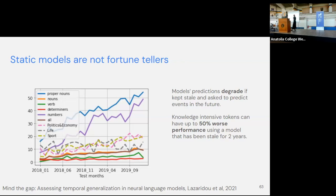A paper that highlights this problem is called 'Mind the Gap.' It tests performance across different types of knowledge — proper nouns, nouns, numbers, verbs, and so on — and measures how the model behaves across different time splits. Since it's measuring error rate, higher is worse. Proper nouns are the most severely affected, which makes sense because proper nouns are the words we keep inventing over time.